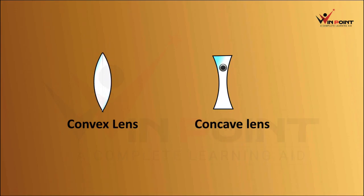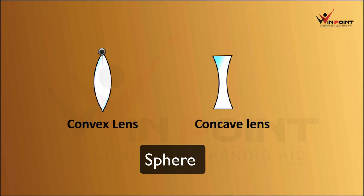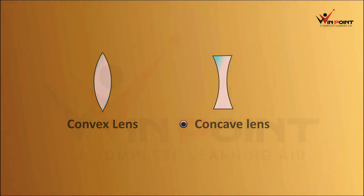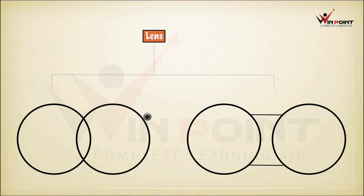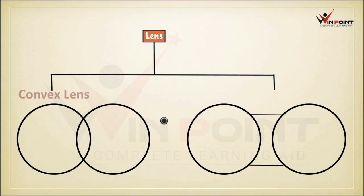Concave lens is also having two surfaces — surface number one and surface number two. When we complete each surface, we will get a circle. Here we completed that circle and we got two spheres. So it is known as spherical lenses. The two sides of a lens are parts of spheres.